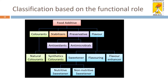Classification based on functional role: food additives have a specific functional role in the food to which they are added. For example, colorants improve the color of the product. Based on their functional role, they are classified as colorants, stabilizers, preservatives, and flavors. They are further sub-classified as antioxidants and antimicrobials, natural colors and synthetic colors, sweeteners, flavorings, and flavor enhancers. Sweeteners are further classified as nutritive sweeteners and non-nutritive sweeteners.